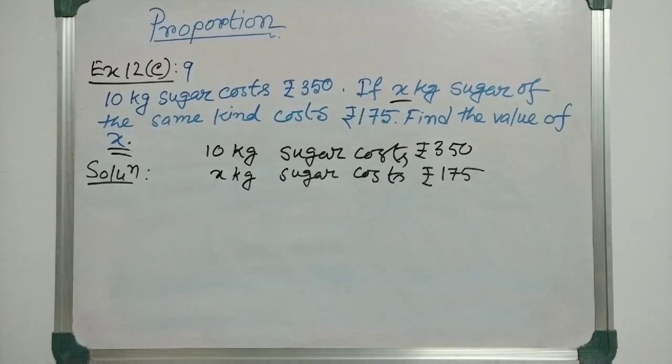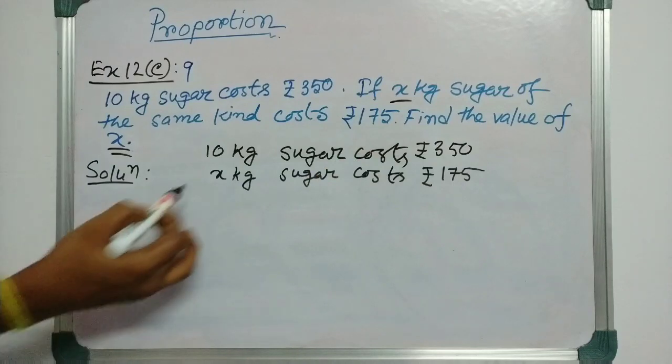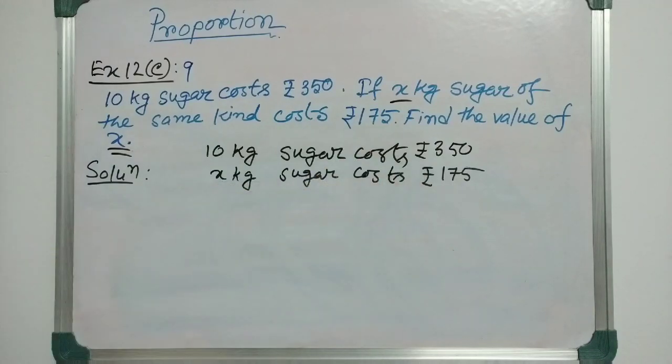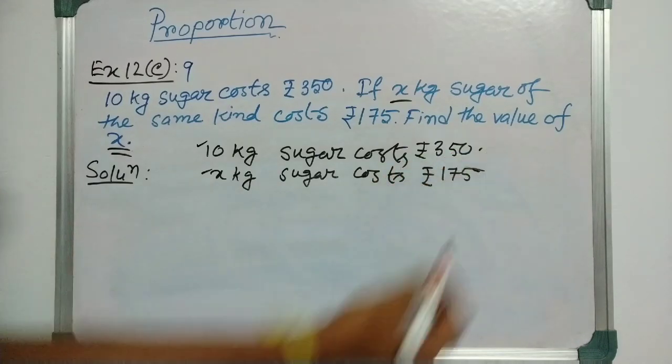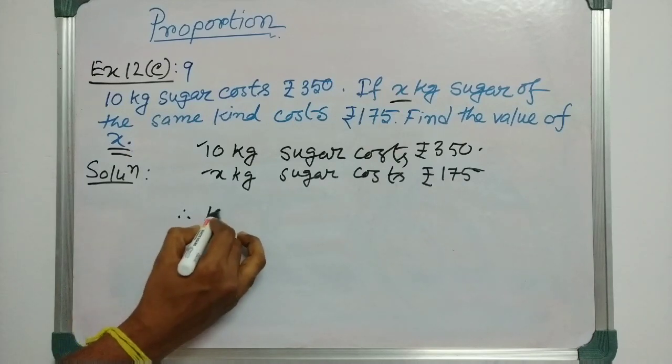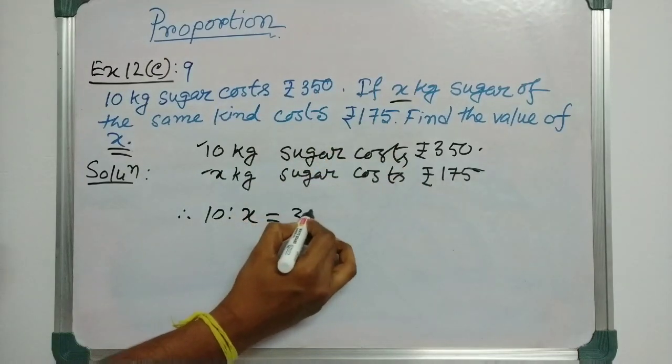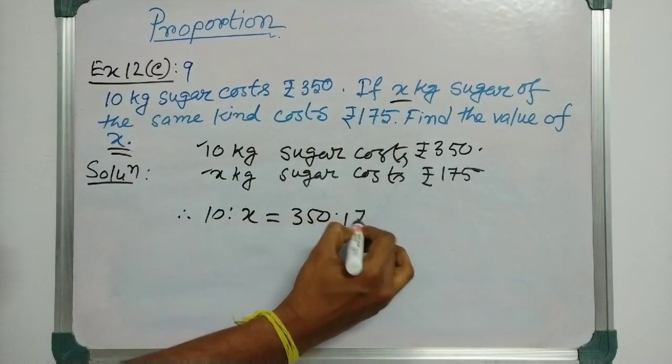In the question, it is given that 10 kg sugar costs rupees 350 and x kg sugar costs rupees 175. So, we can easily say that the ratio between x and 10 is obviously equal to the ratio between 175 and 350. That means we can write that 10 is to x equals 350 is to 175.